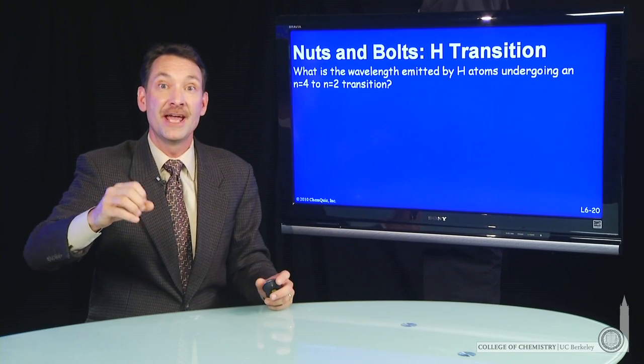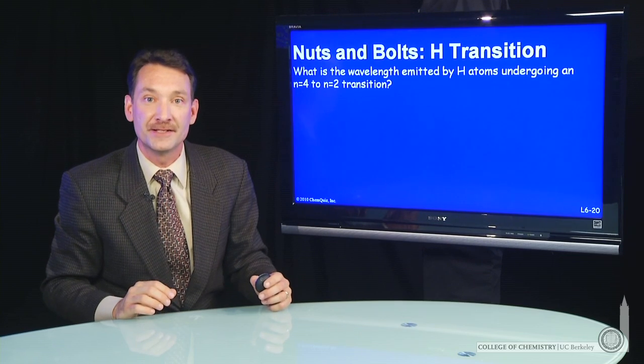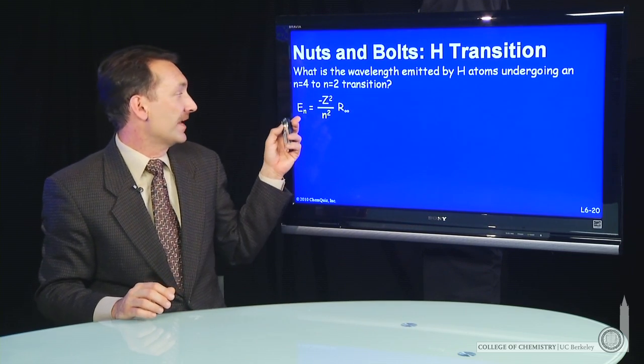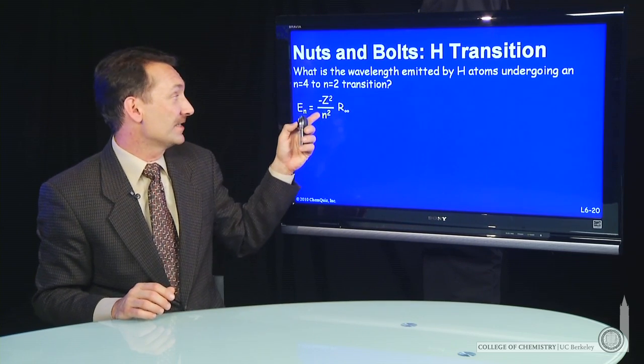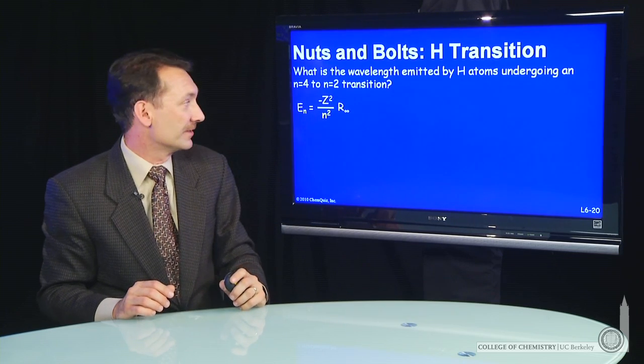We can calculate the energy difference and calculate the wavelength of the photon that's emitted. So the energy levels go as minus z squared over n squared times the Rydberg constant.